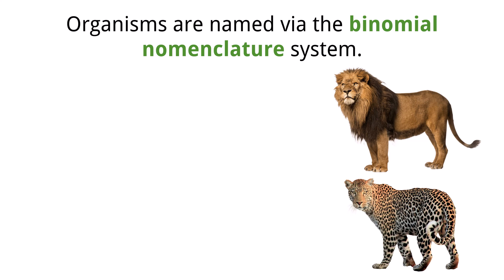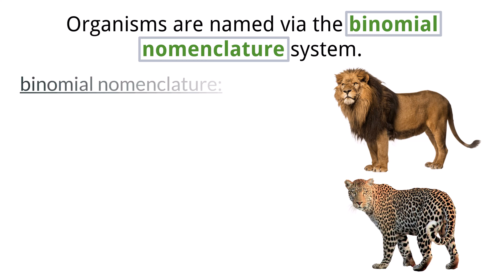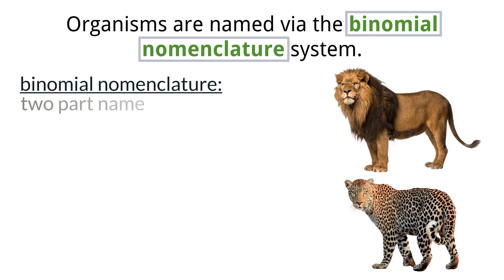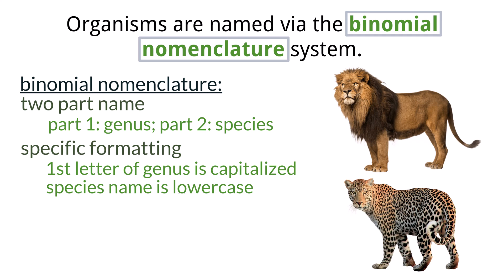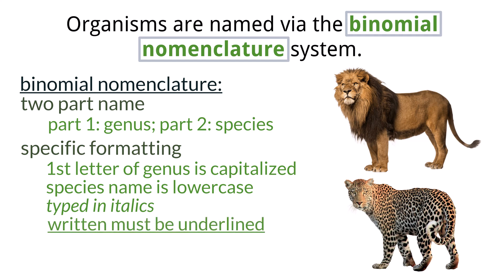The system that Linnaeus created, which is the system that we still use, is called the Binomial Nomenclature System. This system requires each individual species to have a two-part name with very distinct formatting that also classifies their relation to other organisms. A name written in scientific nomenclature is created by the genus name and the species name of the organism. The first letter of the genus name is always capitalized, while all letters of the species name are lowercase. If it is being typed, all letters must be italicized, and if it is being written, all letters must be underlined. You must use this formatting during all formal IB examinations when specifically asked, including on the IA.